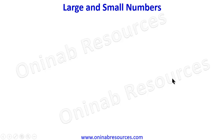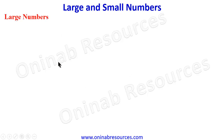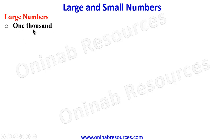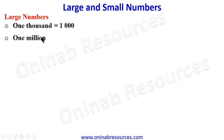Hello and welcome to this tutorial on large and small numbers. We start with large numbers: one thousand. One thousand has three zeros. Then we go to one million — one million is one thousand thousand.